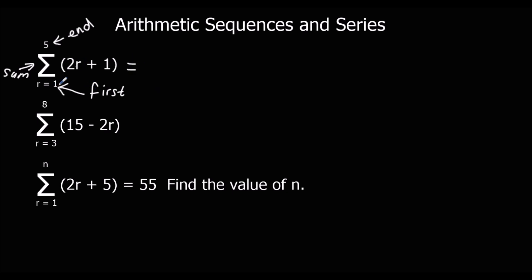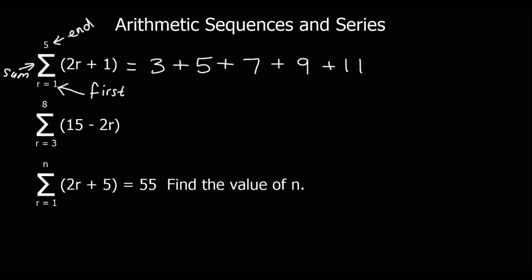So the first one, I'm going to substitute in one. So two ones plus one — two plus one is three. Then I'm going to substitute in two: two twos plus one. Then two threes plus one, two fours plus one, and ending with two fives plus one. So this means the sum of this progression, two r plus one, starting with one and ending with five, substituting all the numbers in between and adding them all together. That gives us 35.